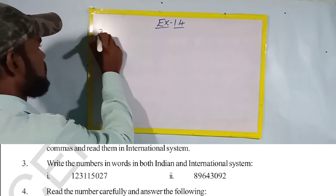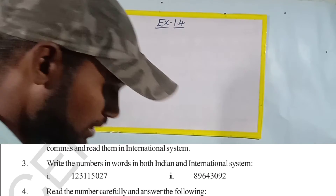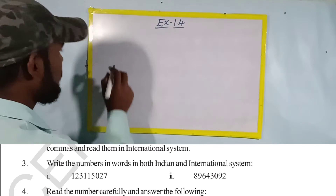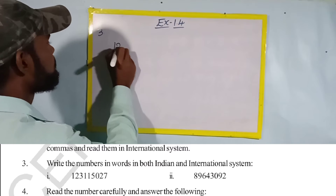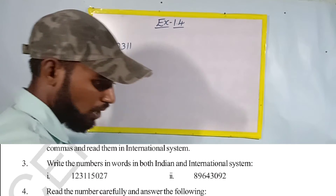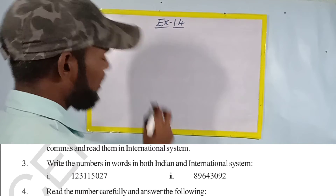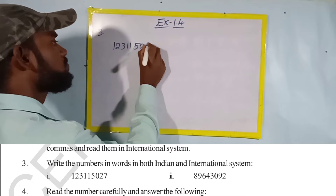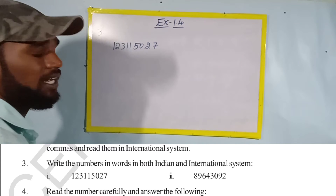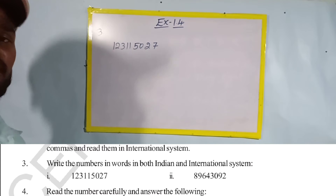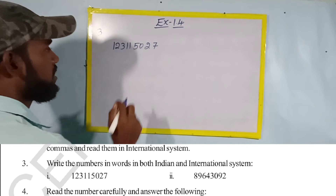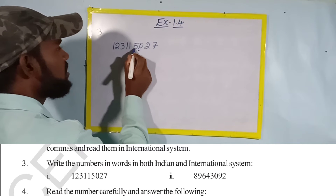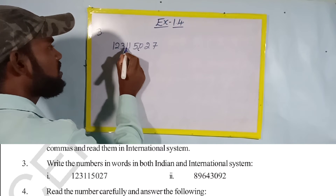What is the first question given? The number is 1, 2, 3, 1, 1, 5, 0, 2, 7 — that is 123,115,027. First, according to the Indian system, we read: ones, hundreds, thousands, ten thousands, lakhs, ten lakhs, crores, ten crores.